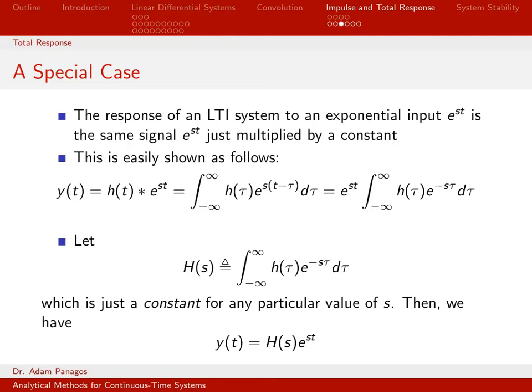Why did I do that? Well, again, what I'm trying to show is that when I have an input of the form e to the st, what comes out is e to the st times a number. Well here is the number. Here is e to the st.